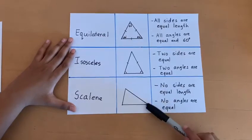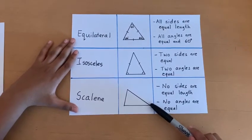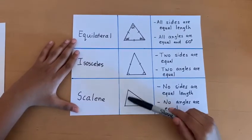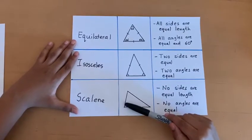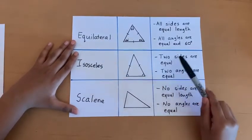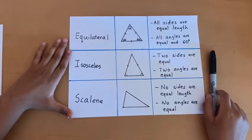For example, this angle could be 50 degrees, this angle could be 60 degrees, and this angle could be 70 degrees. All of these angles add up to 180 degrees.